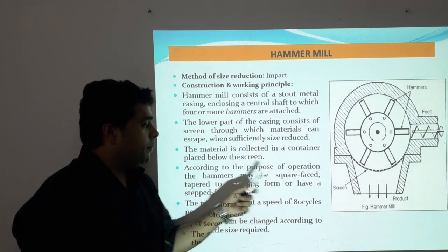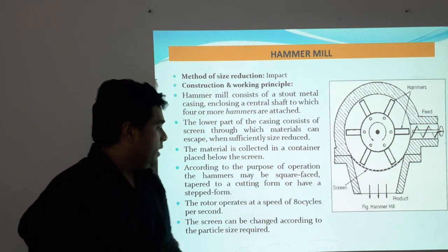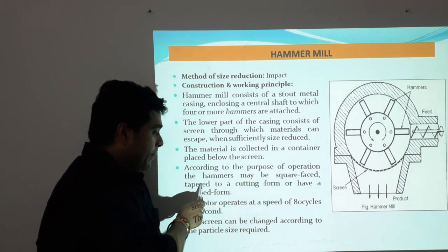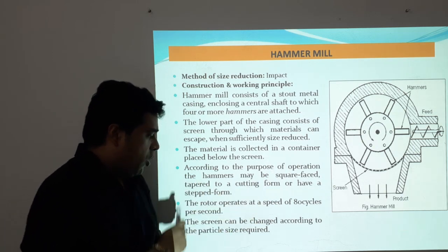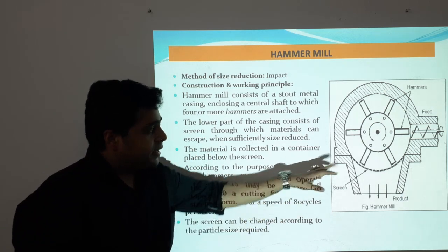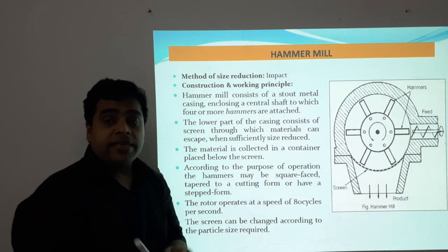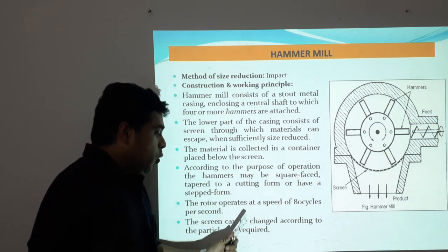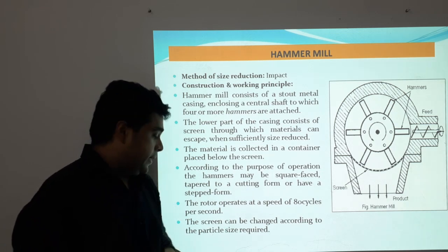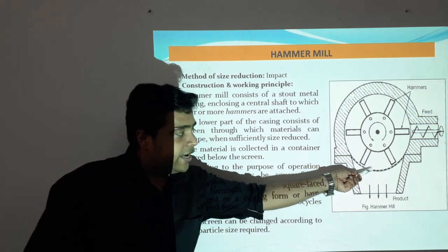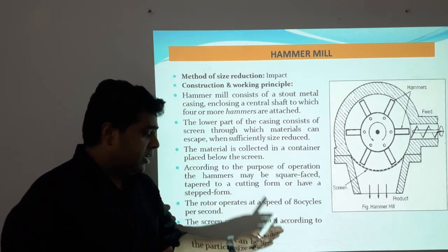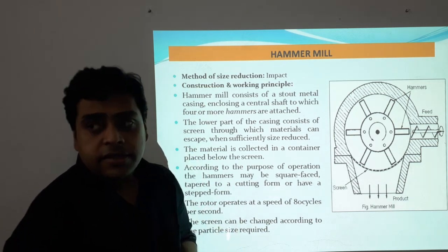According to the purpose of operation, the hammers may be square faced, tapered to a cutting form, or a step form. Different shapes of hammers can be used. The rotor operates at a speed of around 80 cycles per second. The screen or sieve or mesh can be changed according to the size reduction required for the feed.